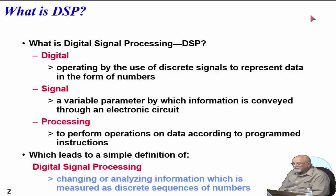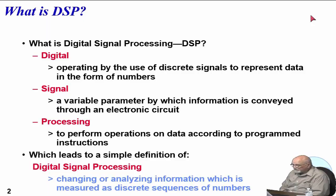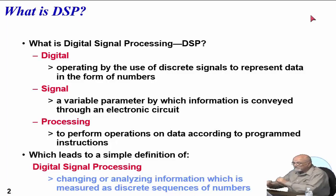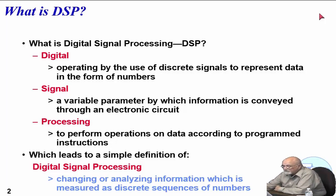That's really what's going on. We have some sort of signal which has information in it, conveyed through the electronic circuit. This signal could be simple sine waves, or a variety of different complex waves. Once we capture the data and put it on, we're going to be doing processing to solve different problems. It basically leads to the simple definition of digital signal processing: changing or analyzing information which is measured in a discrete sequence of numbers.